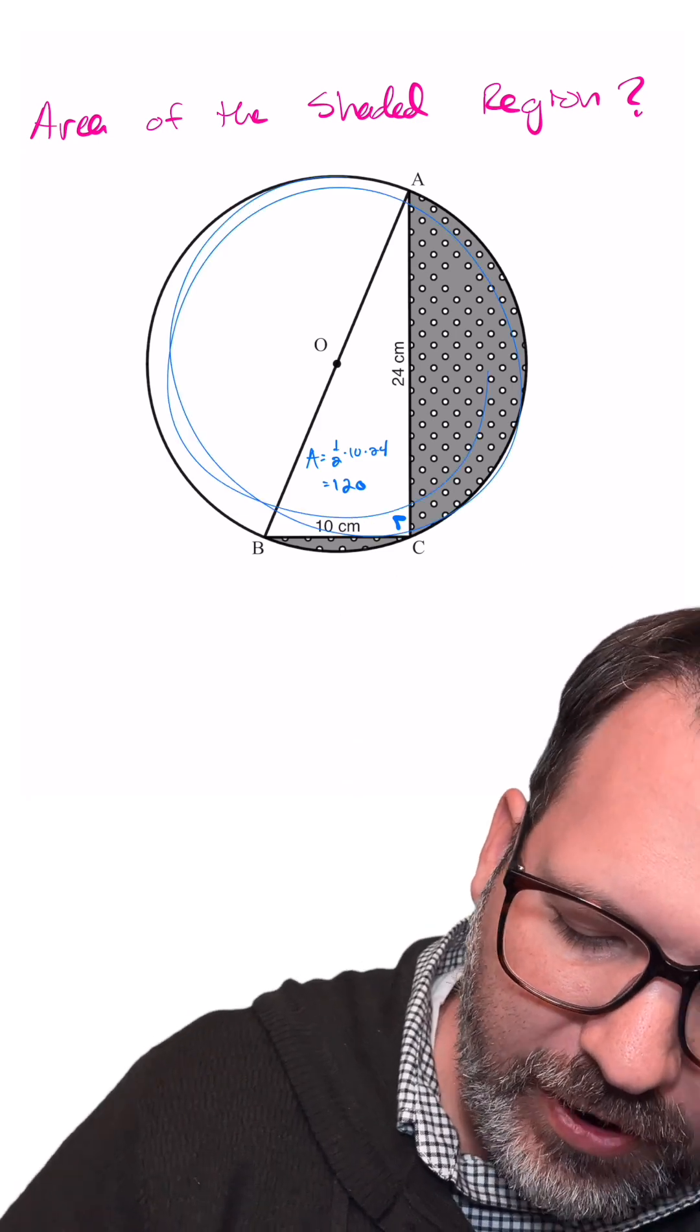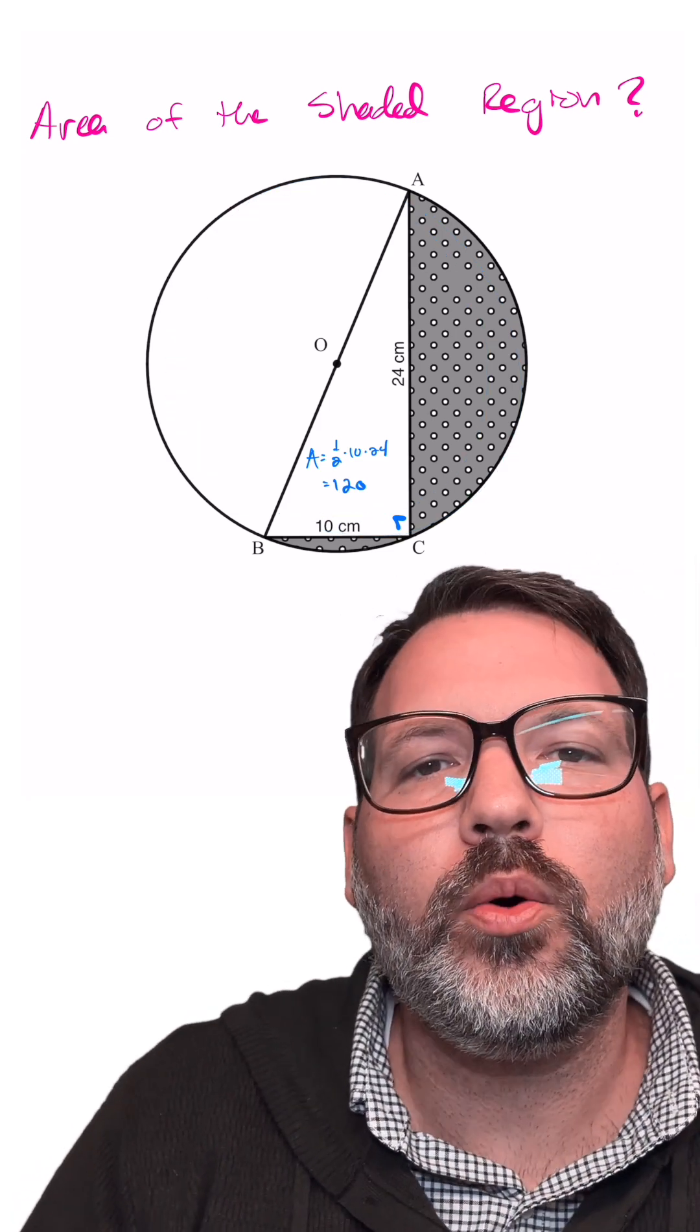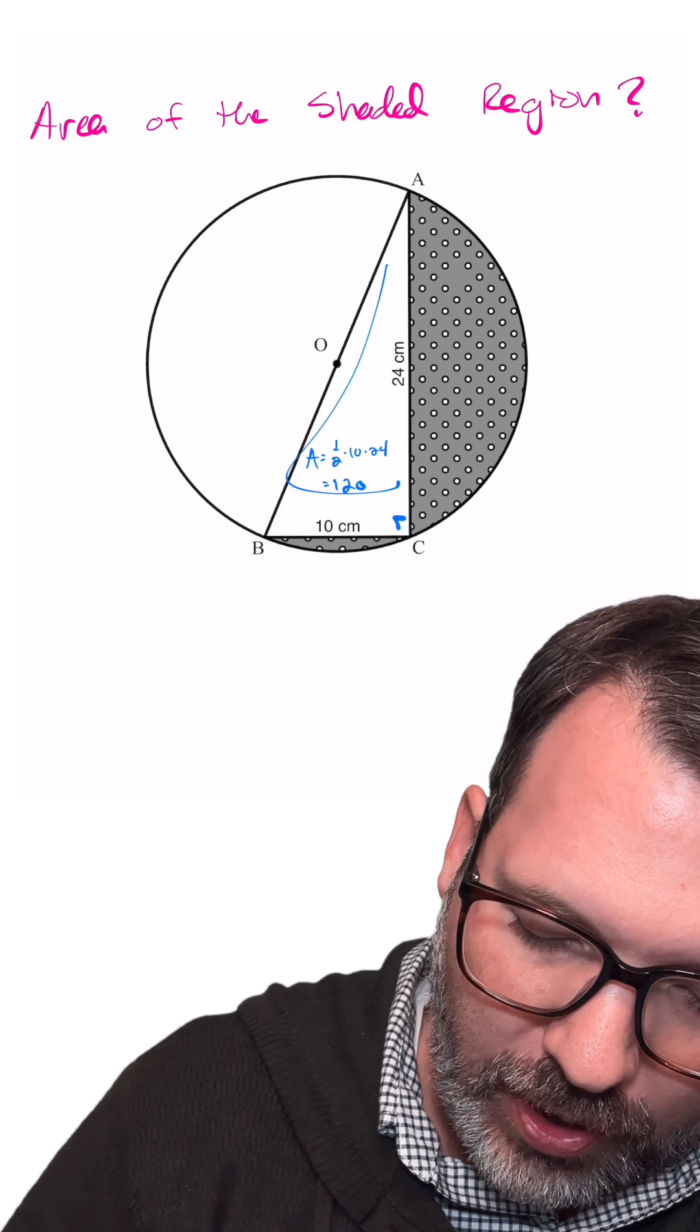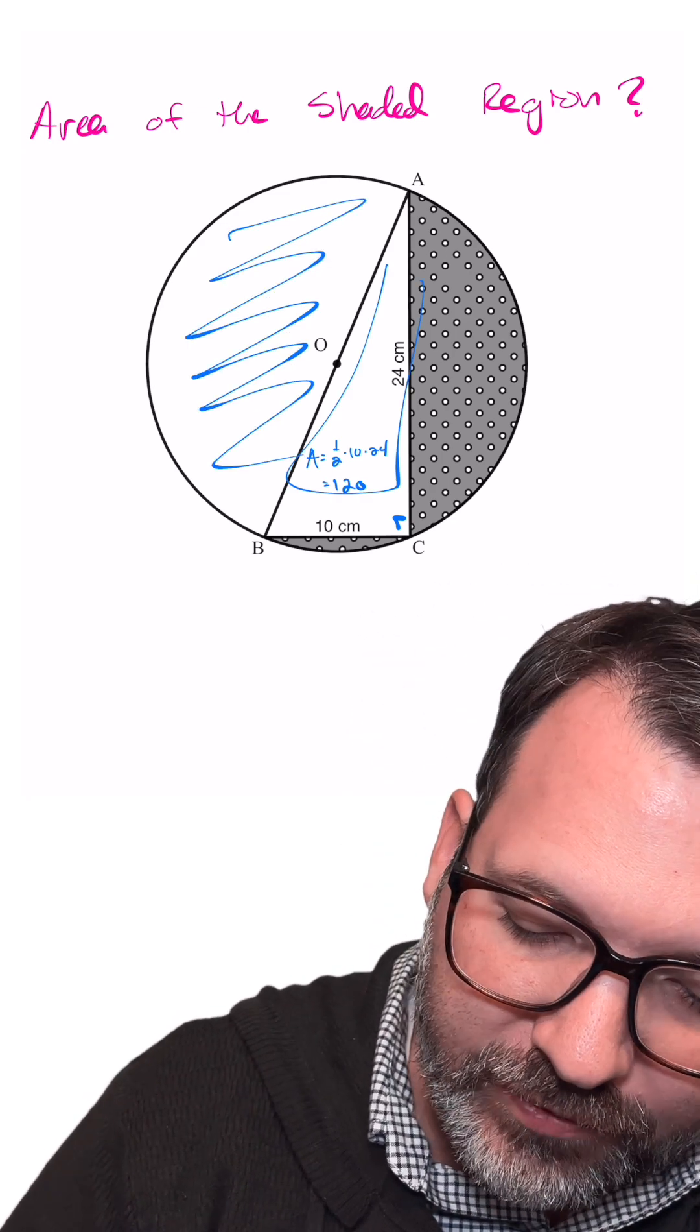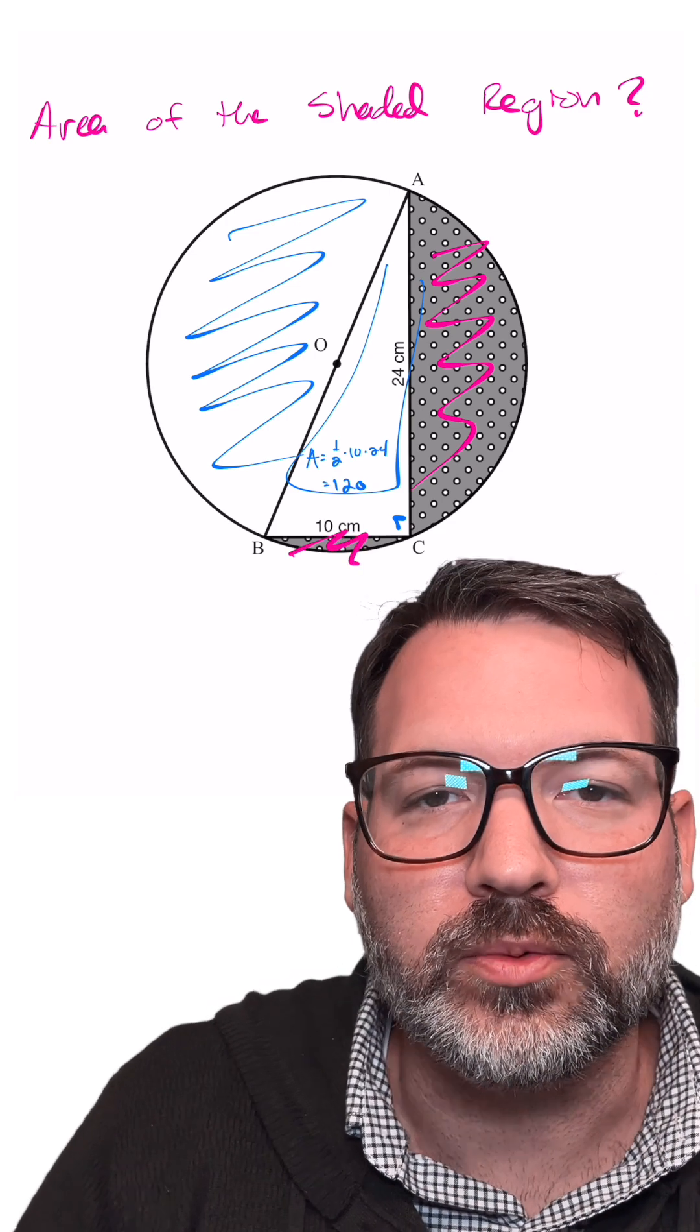From here, if we could find the area of the entire circle, all we'd have to do is subtract away the triangle we just figured out, and then this semicircle over here, and everything that's left over must match the shaded region.